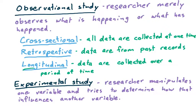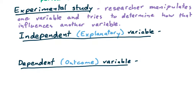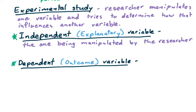The other type of research study that we can perform is what we call an experimental study. In this situation, the researcher manipulates one variable and tries to determine how that influences another variable. So in an experimental study, there are two variables involved: the independent variable, or the explanatory variable, and the dependent variable, also called the outcome variable. The independent variable is the one being manipulated or controlled by the researcher.